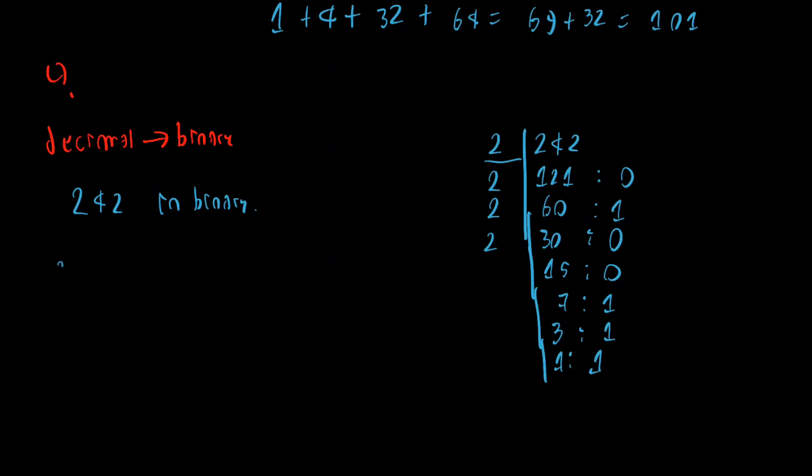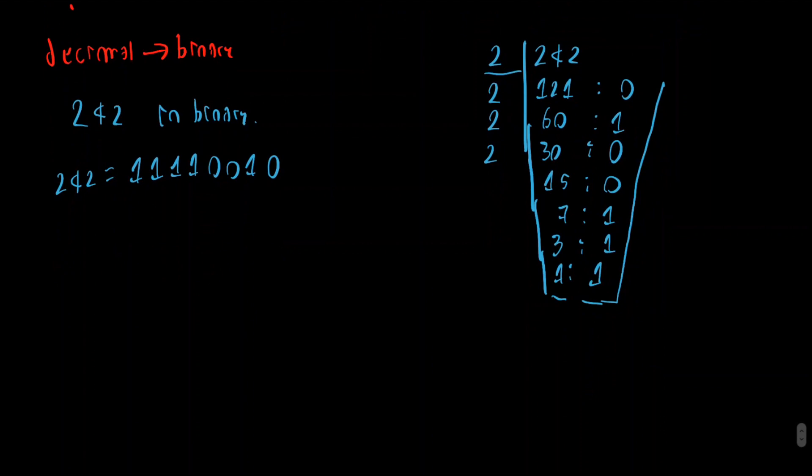So now we write our number in the following way. We're going to write it starting from the left, starting with the last quotient. Then the last remainder. And then going up these remainder columns. Like this. So let's give this example. It's really easy to understand. So this will be 1, 1, 1, 1. Then 0, 0, 1, 0. So let's check that now this is actually 242.